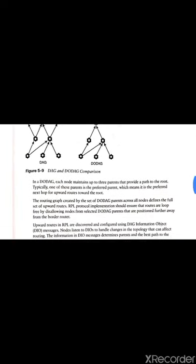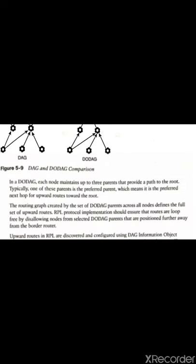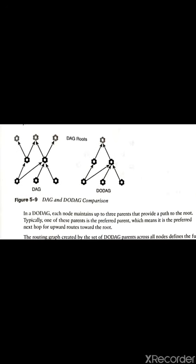Then what about the downward routes? The downward routes are established by nodes using Destination Advertisement Object messages, or DAO messages.